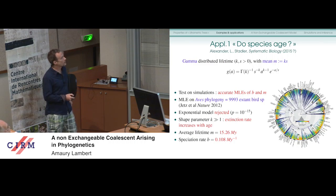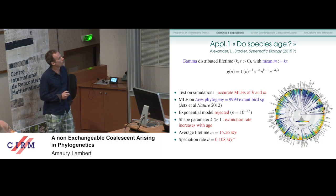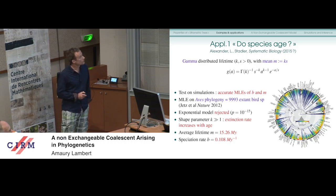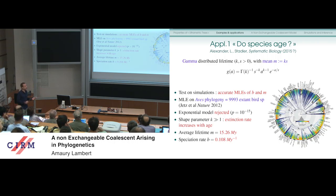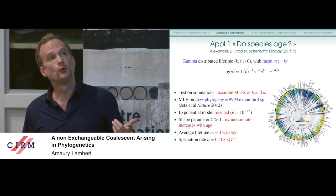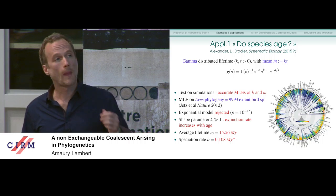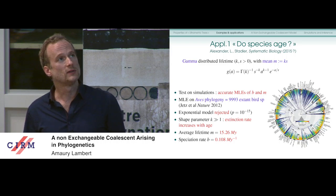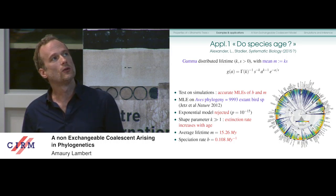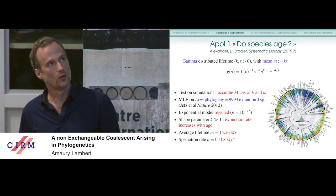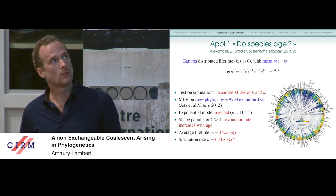Let me show two applications. The first is a question we tried to answer with Helen Alexander and Tania Stadler: do species age? The kind of age dependence we put in the model is age dependence in the death rate — equivalently, saying that the lifetime of a species is general. We parameterize the lifetime distribution of species as a gamma random variable: not necessarily the best choice, but it nicely interpolates with the exponential and makes inverting Laplace transforms easier.